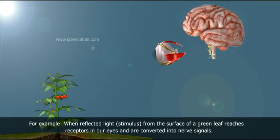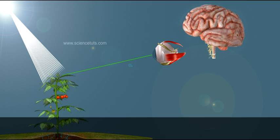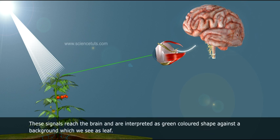For example, when reflected light stimulus from the surface of a green leaf reaches receptors in our eyes and is converted into nerve signals, these signals reach the brain and are interpreted as a green colored shape against a background, which we see as a leaf.